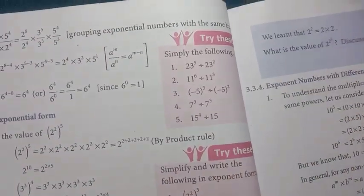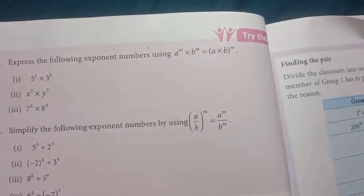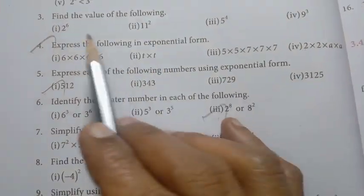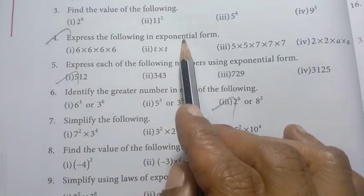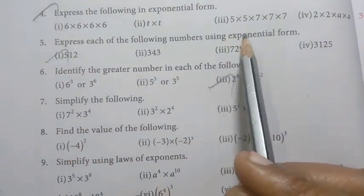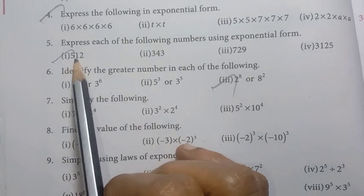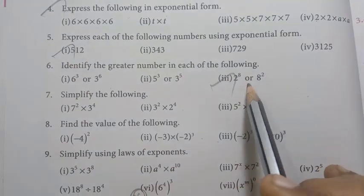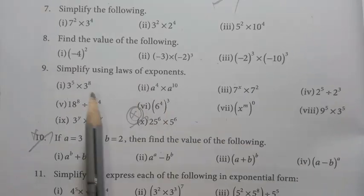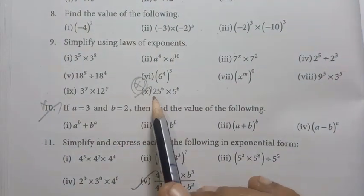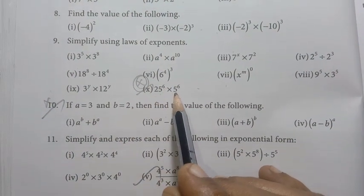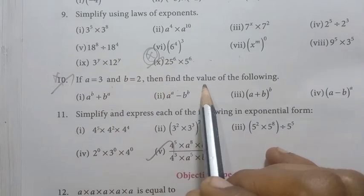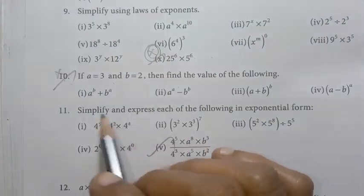Page number 52: express the following in exponential form. Express each of the following numbers using exponential form — 512. Identify the greater number: 2 power 8 or 8 power 2. Simplify using laws of exponents: 25 power 6 into 5 power 6. Tenth one: if a equals 1 through 3 and b into the 2, find the value of the following. It is repeated.